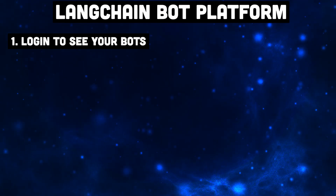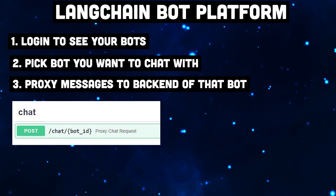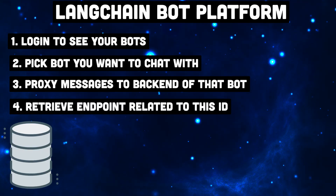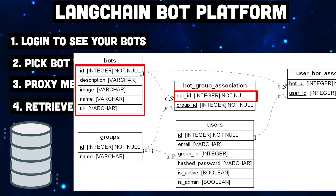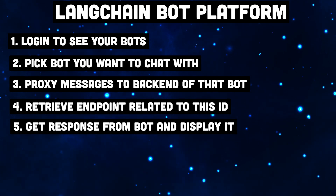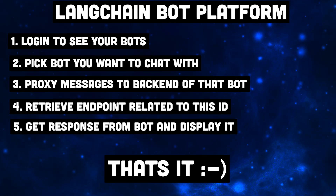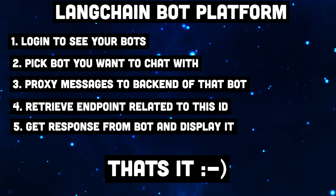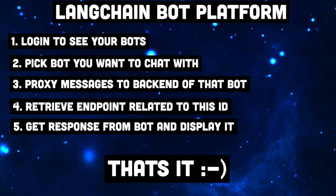So here is how the workflow now comes together. We log in, we see the bots we are allowed to see. We pick a bot with a specific ID, send the messages via a button click, where we pass the bot's ID to the backend. We use that ID to retrieve the correct URL from the database, pass all messages to that URL, get the bot's response and then add it to the conversation, displaying it in the UI. And that's basically it. With that approach, you can easily combine multiple chatbots and you could even take one bot's response and send it to another bot. Pretty awesome — let me know your thoughts in the comments.